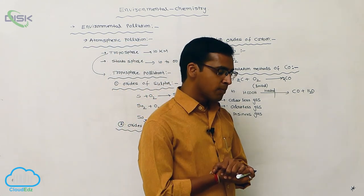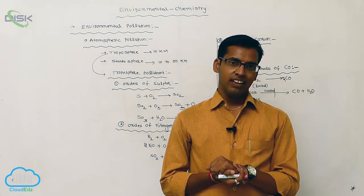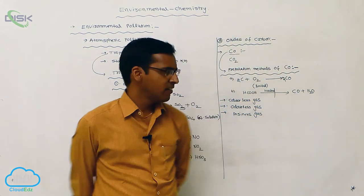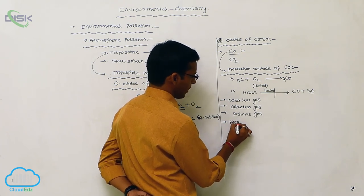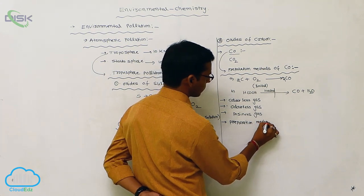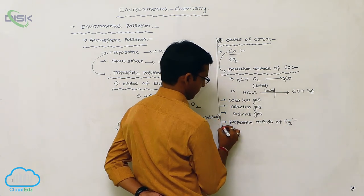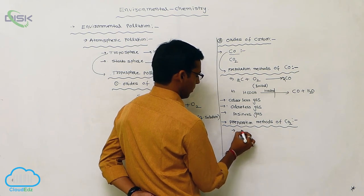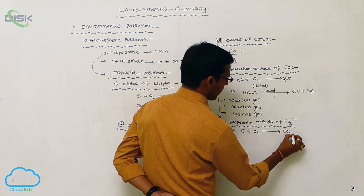The next oxide of carbon is carbon dioxide (CO₂). Carbon dioxide is prepared when carbon reacts with a sufficient amount of oxygen, producing carbon dioxide.